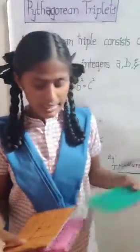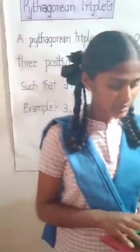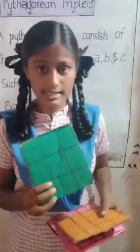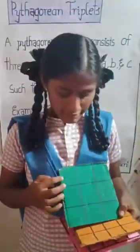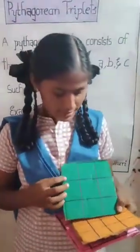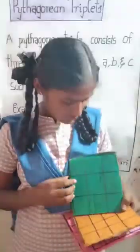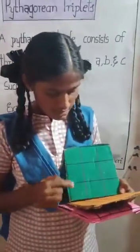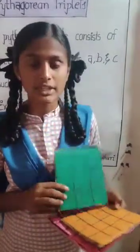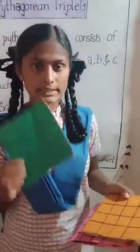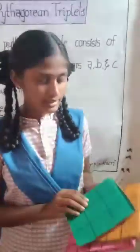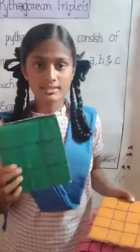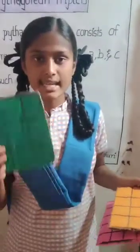Let us make this sum. We have three boxes in this. Here we can make that three squared — three boxes with three rows. 3 into 3 is equal to 9. Let us consider this as A.